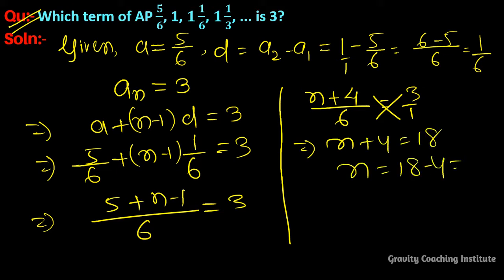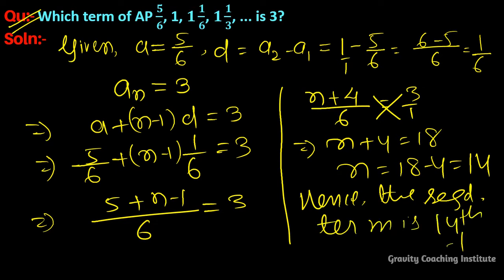So n equal to 18 minus 4 is equal to 14. So hence the required term is the fourteenth term. Answer.